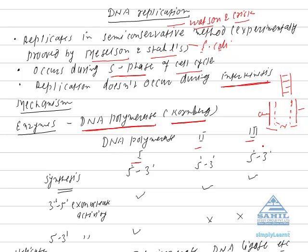What are the differences between the three types of DNA polymerase? DNA always replicates in the 5'-3' direction. This 5'-3' synthetic activity is found in all three classes of DNA polymerase enzyme — DNA polymerase 1, 2, and 3 — and is essential for DNA replication.